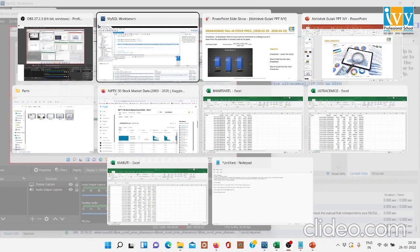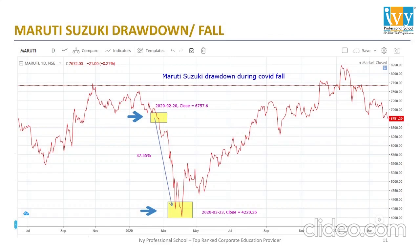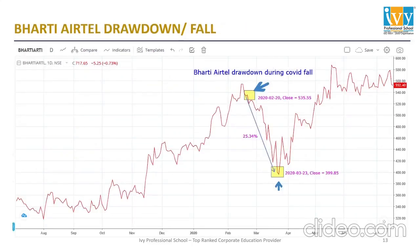Going back to the graphical representation, Ultratech Cement's drawdown was 31.01%, Maruti Suzuki's was 37.55%, and Bharti Airtel's drawdown was 35.34%. The insight here is: lower drawdown is better. Ultratech Cement had the least drawdown, while Maruti Suzuki had the most drawdown during the specified period. This is also shown on real-time charts for Maruti Suzuki, Ultratech Cement, and Bharti Airtel.